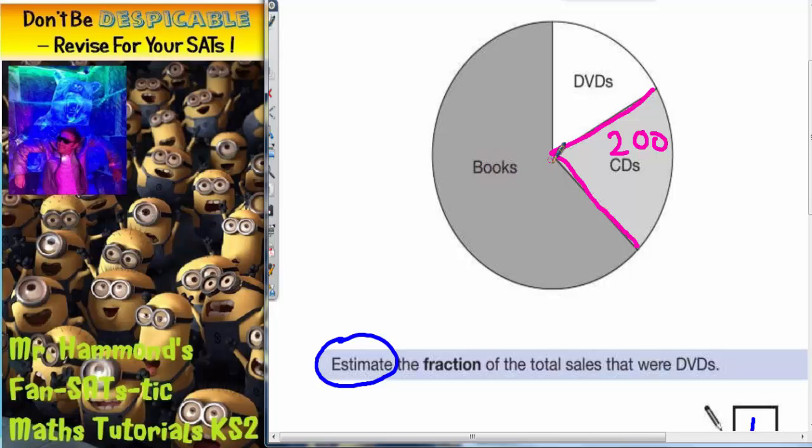And the easiest thing to do is just start drawing sections on that are roughly that size. So if I draw a line down here, these two sections are roughly the same size. So that's another 200. Then draw a line up here. These two sections are roughly the same size. So that's another 200. And you can see that the final section in books is roughly the same size again. So that's another 200.